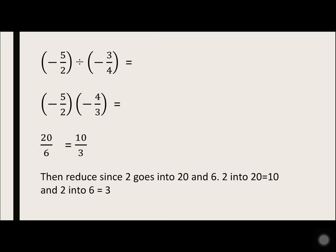So multiply. A negative times a negative equals a positive. On top, 5 times 4 equals 20. 2 times 3 equals 6. Then reduce since 2 goes into 20 and 6. 2 goes into 20 ten times, 2 goes into 6 three times.